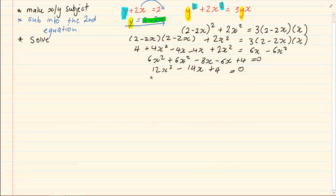You can now take out a common 2. We left with 6x squared minus 7x plus 2 is equal to 0. Okay, so we have, once we factorized, we have 2x minus 1, 3x minus 2 for the trinomial.